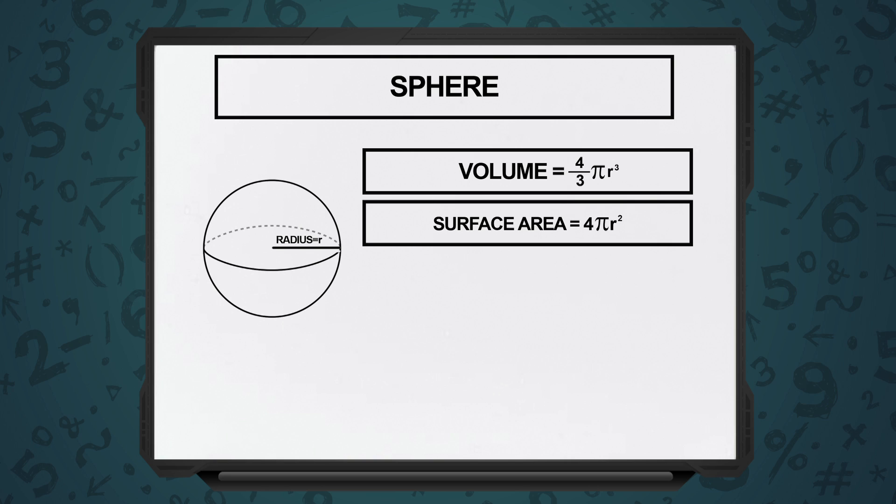So, for volume of a sphere, the formula is 4 upon 3 pi r cube. And the surface area of a sphere is 4 pi r square.